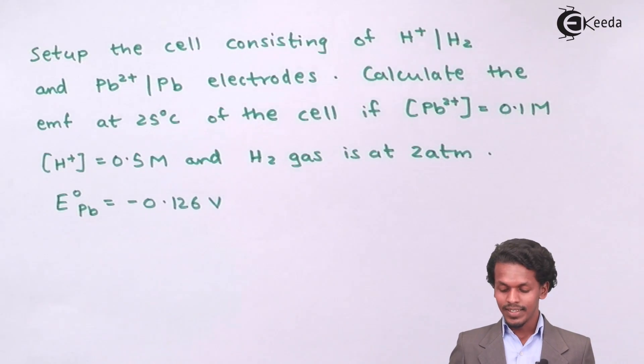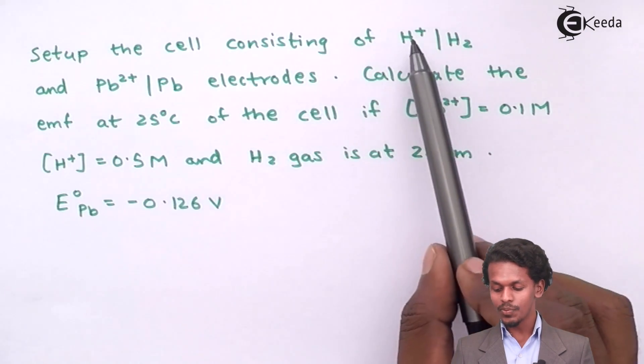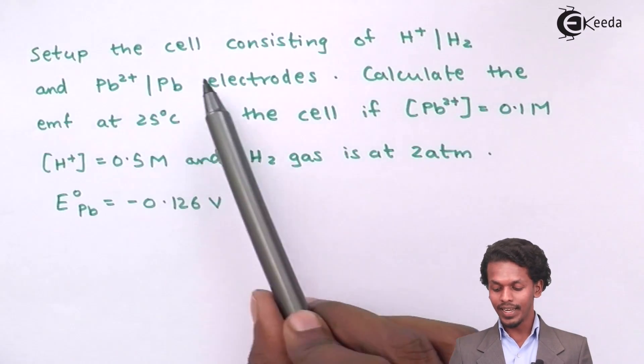In this case, they have mentioned that we have to set up a cell that consists of H plus, H2, and Pb2 plus, Pb electrodes.